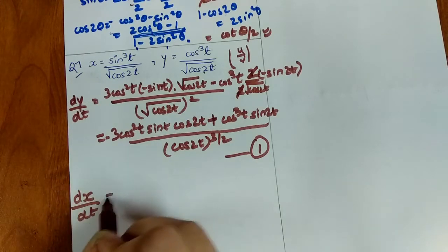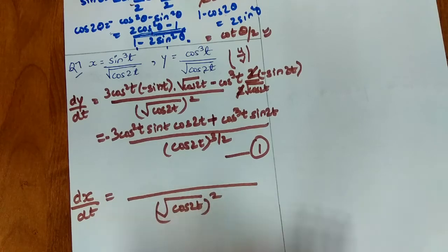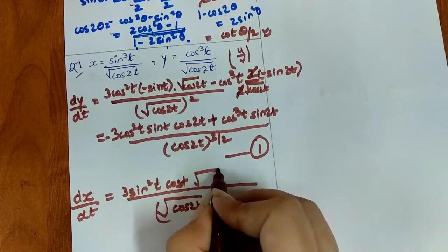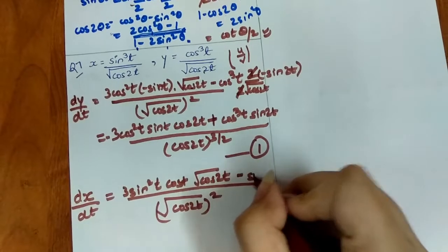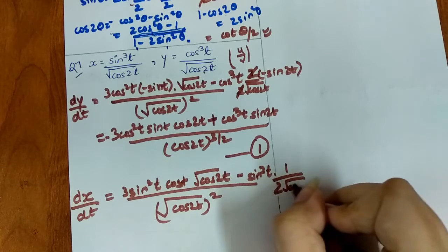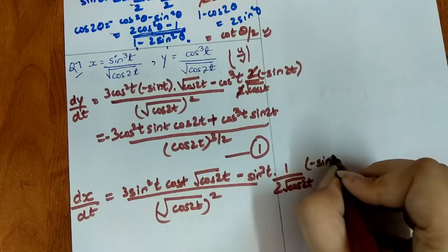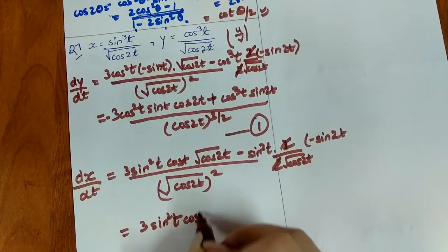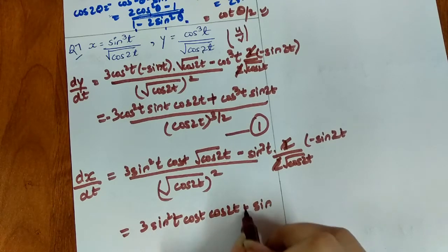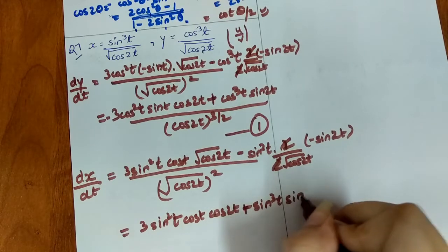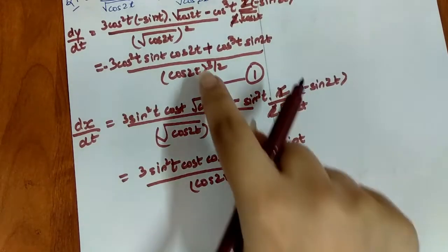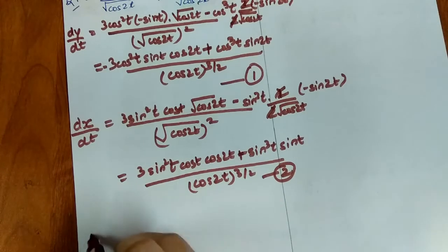Similarly for dx/dt using the quotient rule on sin³t / √(cos 2t): numerator becomes 3sin²t cos t cos 2t + sin³t sin 2t, over cos 2t to the power 3/2. When we divide dy/dt by dx/dt, the cos 2t^(3/2) terms cancel, giving dy/dx as a ratio of these simplified numerators.